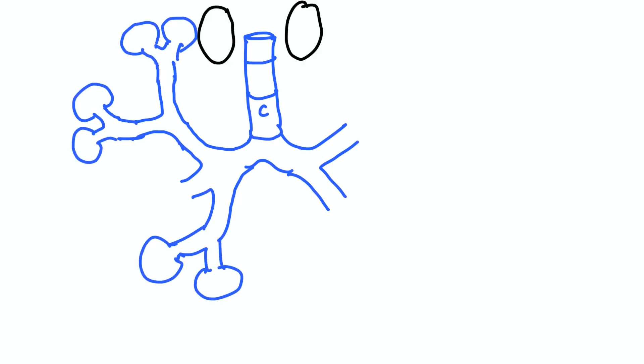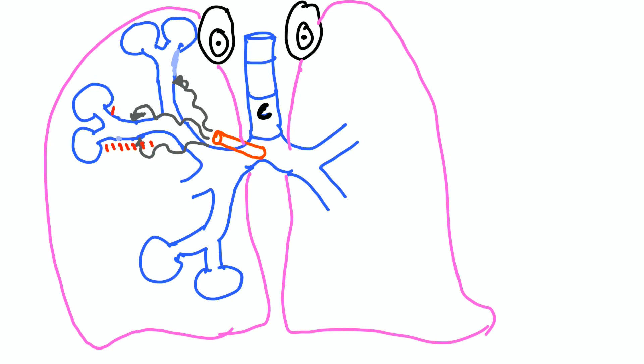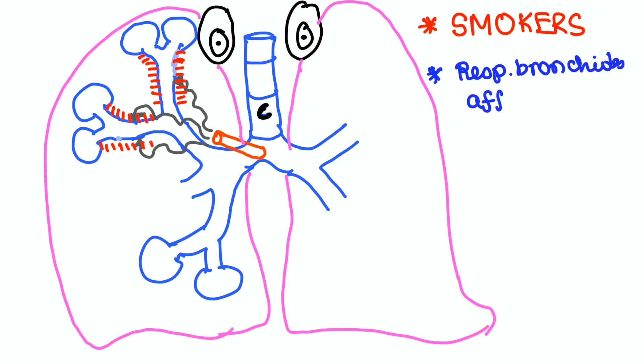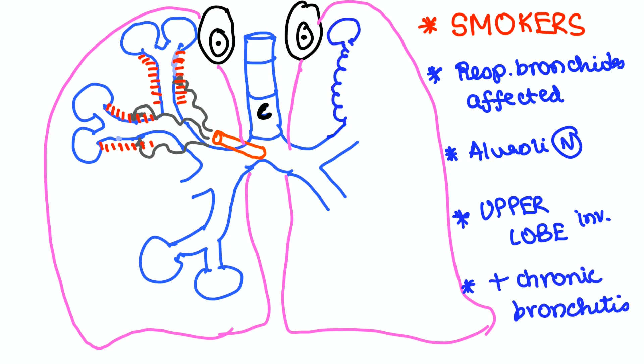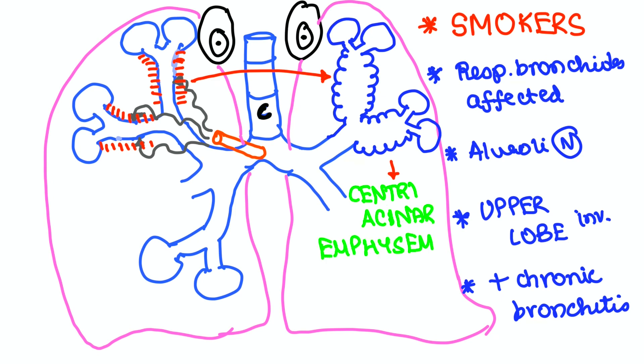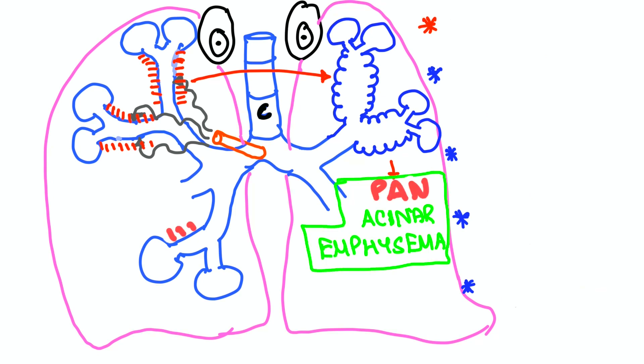Let's see a type of emphysema where it is due to prolonged smoking. Smoke goes up and affects the respiratory bronchioles specifically, and the alveoli are spared. Since smoke goes up, it affects the upper lobe, so it is mostly in association with chronic bronchitis. This is centriacinar emphysema because only the center part is involved and alveoli are spared.